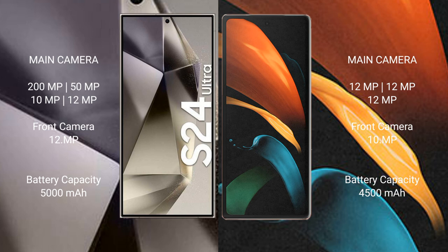The Samsung Galaxy S24 Ultra has a 5000mAh battery with 45W fast charging support. The Samsung Galaxy Z Fold 2 has a 4500mAh battery with 25W fast charging support.